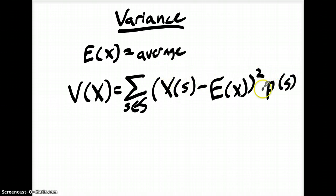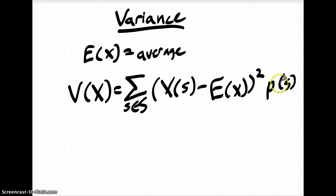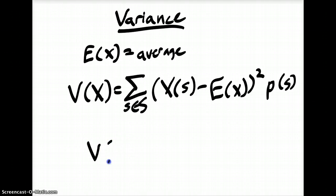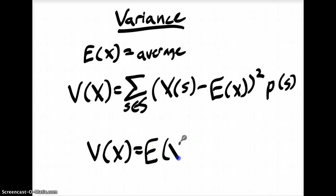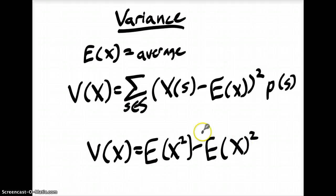Basically what this is, is the difference between the expected value of X and the value of the random variable X(s), squared so there's no negative, then multiplied by the probability of that sample actually occurring. We can actually boil this down to: V(X) equals the expected value of X squared, minus the expected value of X, squared. Note the squares are in different places — that changes their values.